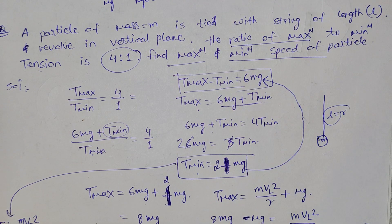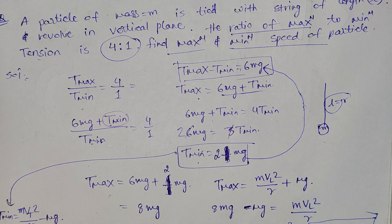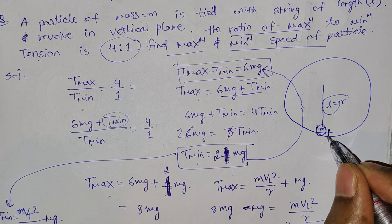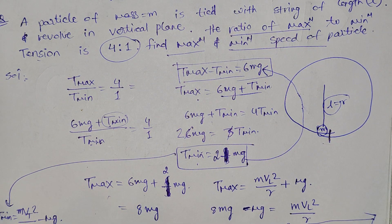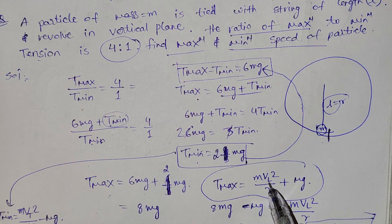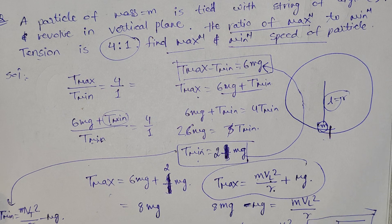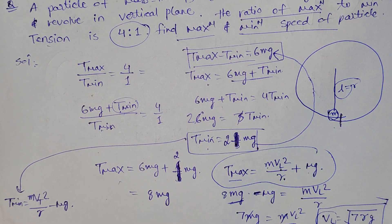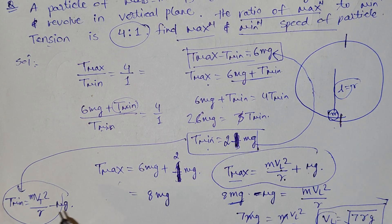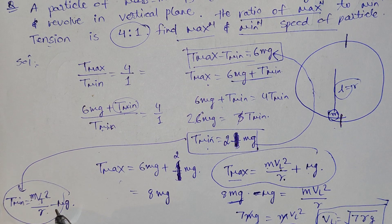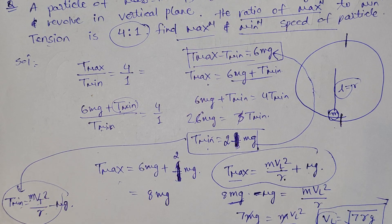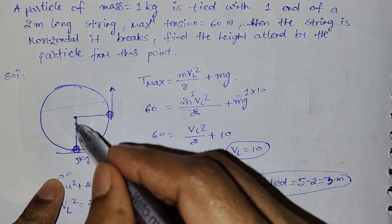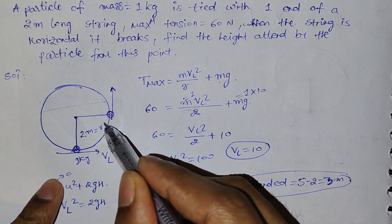Put T_min back to find T_max. T_max occurs at the lowest point: T_max = mv_lower² / r + mg. Similarly, T_min occurs at the highest point: T_min = mv_top² / r - mg. Put T_max and T_min in the respective formulas to get both velocities, then take their ratio.